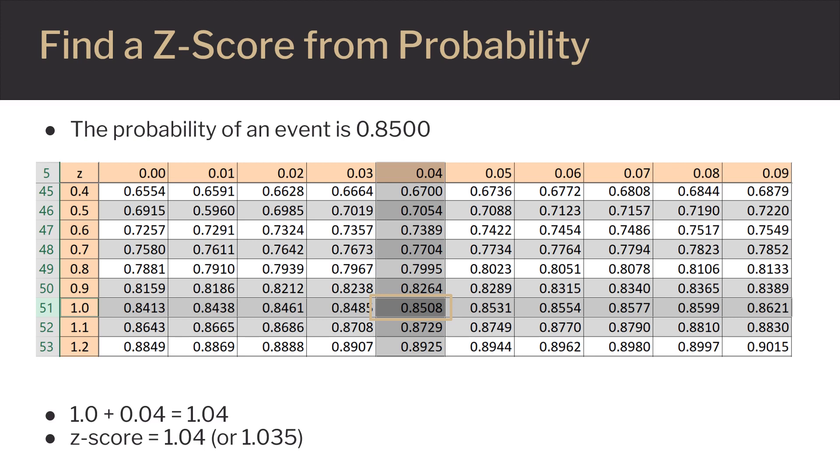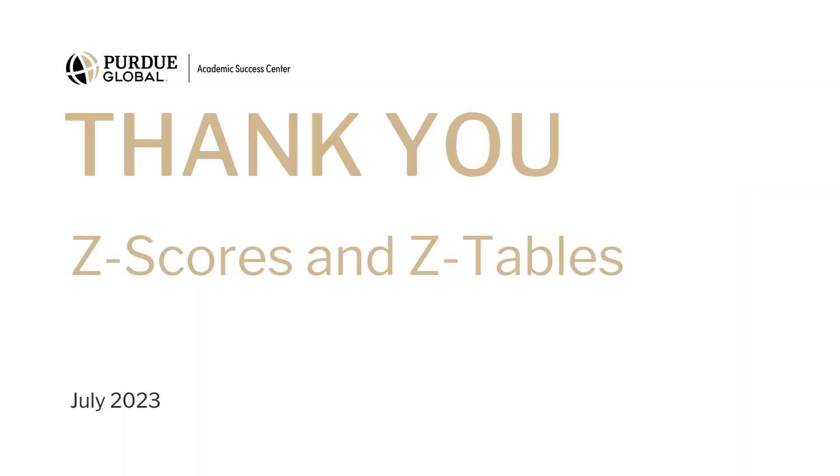So our Z-score is 1.04. Or, you might be able to estimate 1.035, since our actual probability was slightly less than what was shown in the Z-table, but regardless, you can still use 1.04. Thank you for watching this presentation on Z-scores and Z-tables.